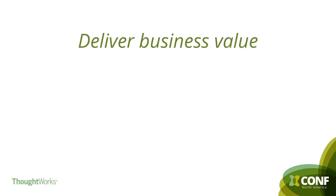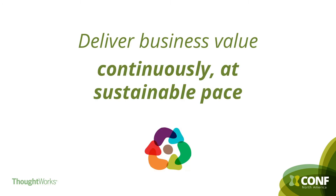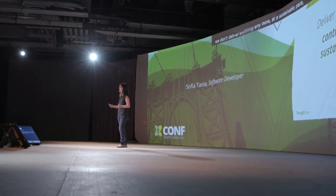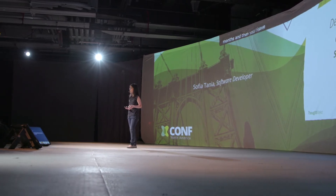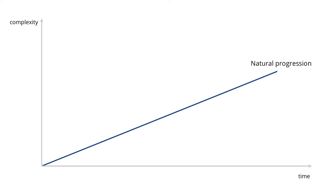I want to step away a little bit and go back to the world of software. As part of a software delivery team, what you typically want to do is to deliver business value continuously and at sustainable pace — not just going for a month and then delivering nothing, and not going really quickly for six months and then having too much technical debt. But the enemy of that goal is the complexity in your system, because as you develop more features and grow your software, complexity grows as well.